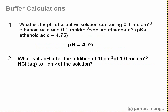The first part of the question was what's the pH of a buffer solution containing 0.1 molar ethanoic acid and 0.1 molar sodium ethanoate. Using the pKa of ethanoic acid being 4.75, we worked out that the pH of that buffer solution would be 4.75 because the concentrations of those two are the same.